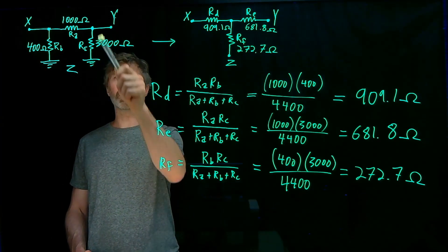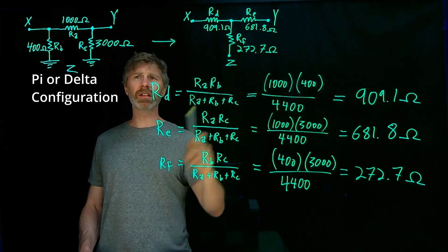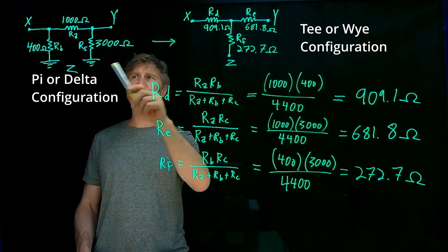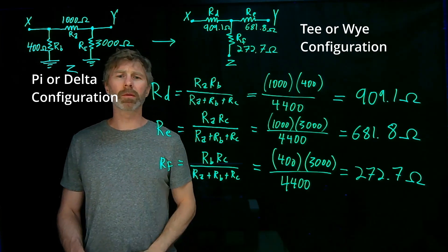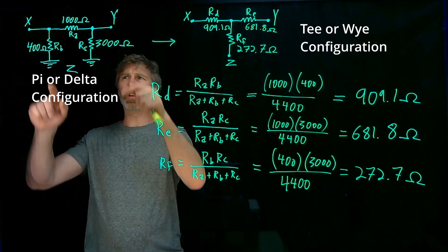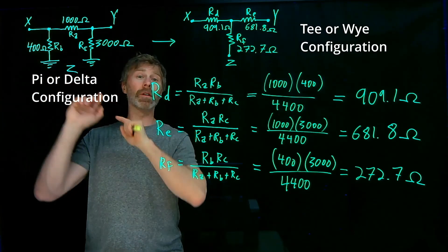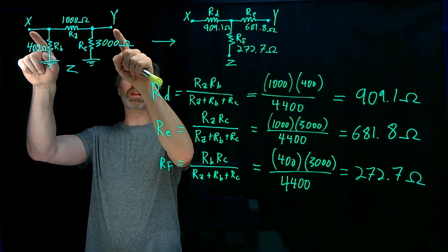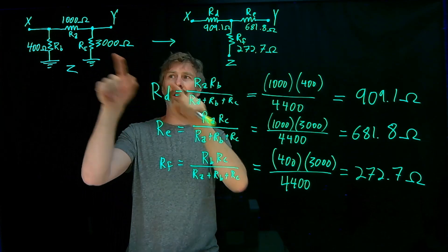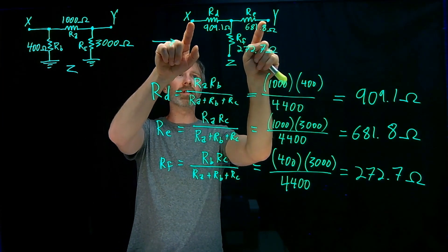So what we end up with are two circuits, one in a pi configuration, one in a T configuration, but these are equivalent circuits. And what it means by equivalent circuits is if I was to measure the resistance between X and Y, I would get the same in this circuit, I would get the same resistance as if I measured it between X and Y over in this circuit.